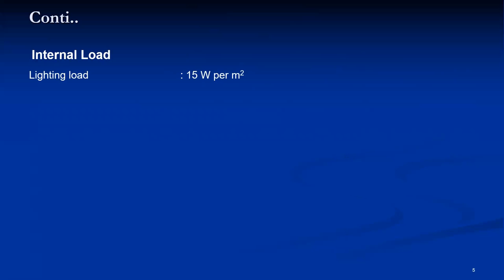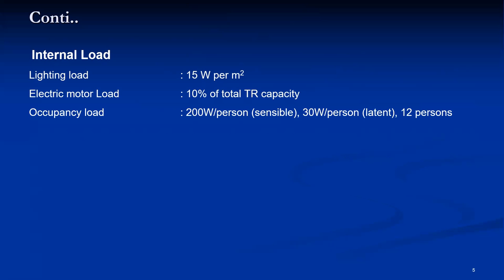The internal load data includes lighting load of 15 Watt per meter square, taken from the design data book for cold storage. The electric motor load is 10% of the total TR. For occupancy load, there are 12 persons working in the cold storage for loading and unloading, each dissipating 200 Watt sensible heat and 30 Watt latent heat. The air changes per hour — which is actually the leakage rate — is 0.25, which is always less than 1 for cold storage, as recommended. For normal air conditioning rooms, this value is 5 to 10, but for cold storage the high value is not recommended.